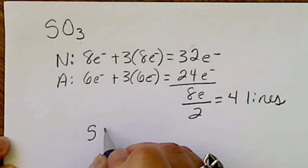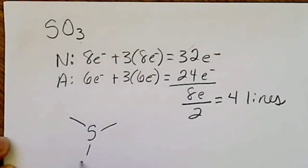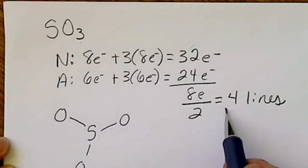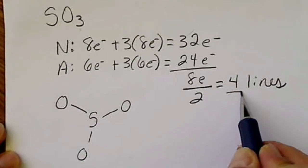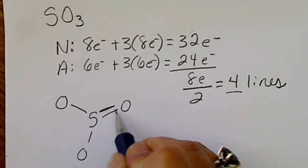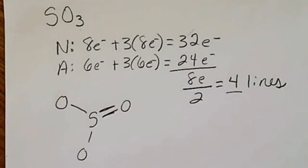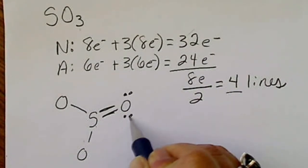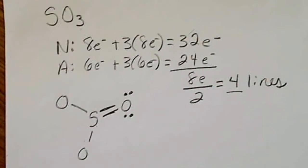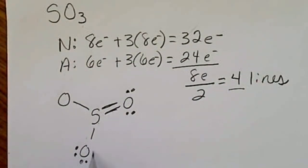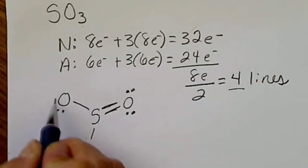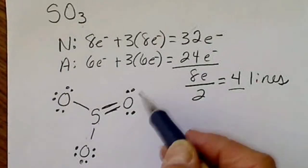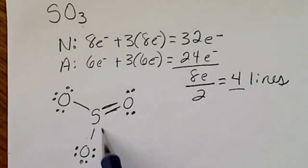We put sulfur in the middle and connect it to three oxygens — that uses three lines. The fourth line creates a double bond to one of the oxygens. Looking at the central atom, sulfur now has eight electrons. The oxygen with the double bond needs two lone pairs, and the other two oxygens each need three lone pairs, giving all atoms eight electrons.